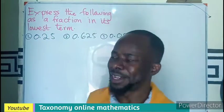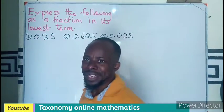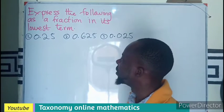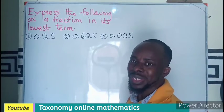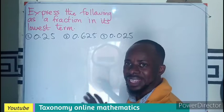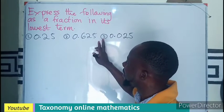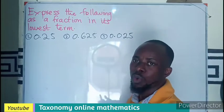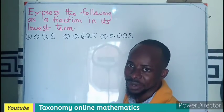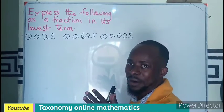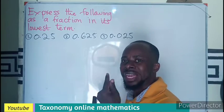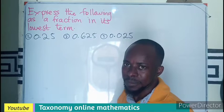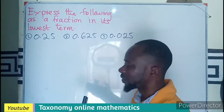Hello, welcome to my channel. Let's use a few minutes to provide an answer to these decimal fractions. We have to express the decimal fractions as a fraction in its lowest term, meaning we want to write them as a common fraction or a proper fraction. One thing we have to know is that we have to identify how many decimal places are involved.